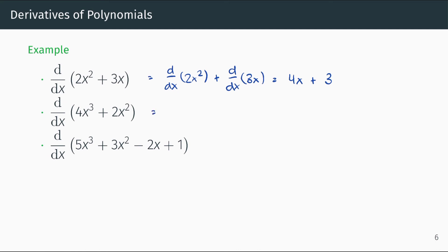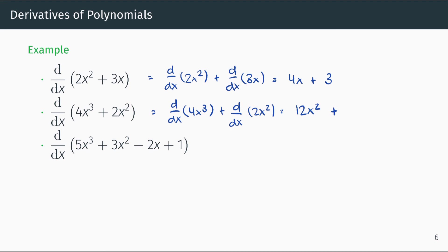Onto the second example: find the derivative of 4x cubed plus 2x squared with respect to x. This equals the derivative of 4x cubed plus the derivative of 2x squared. The derivative of 4x cubed is 12x squared, and the derivative of 2x squared is 4x.